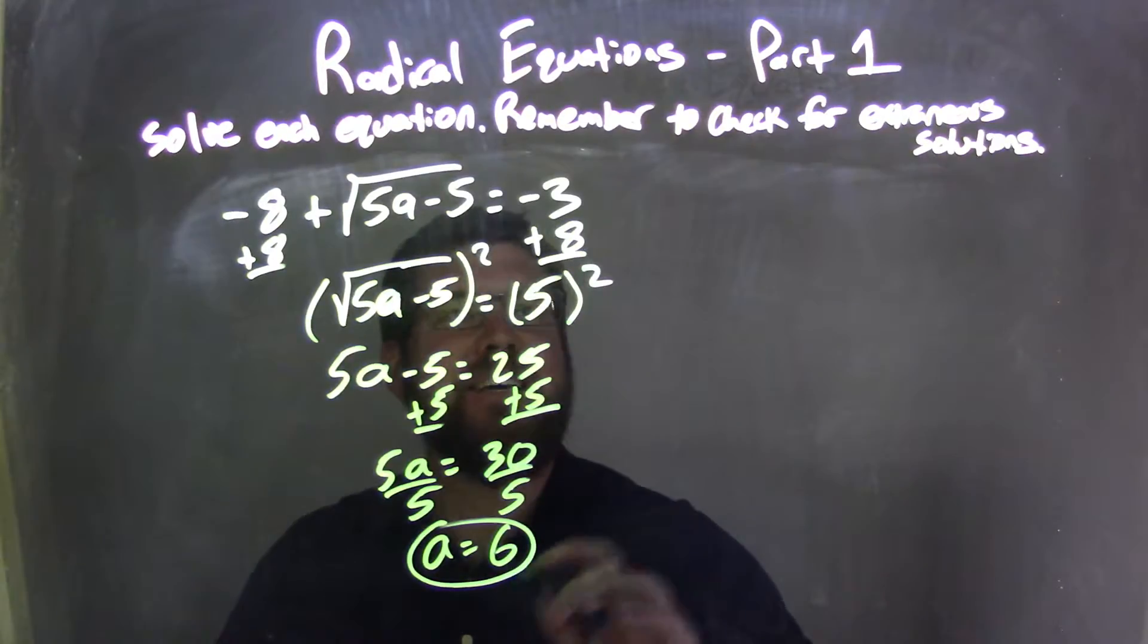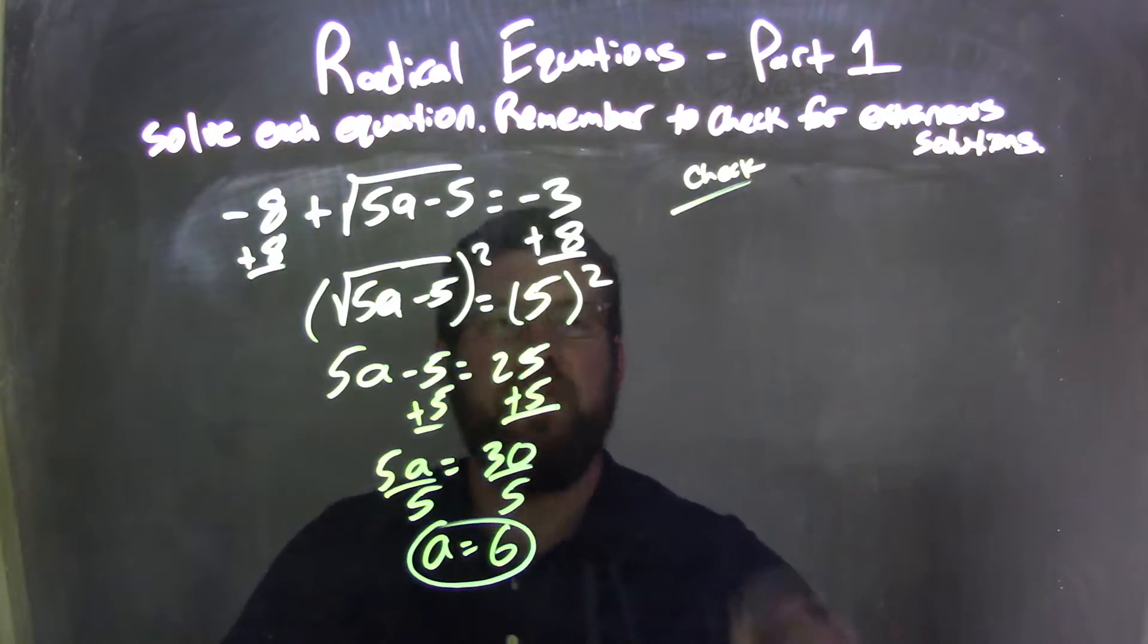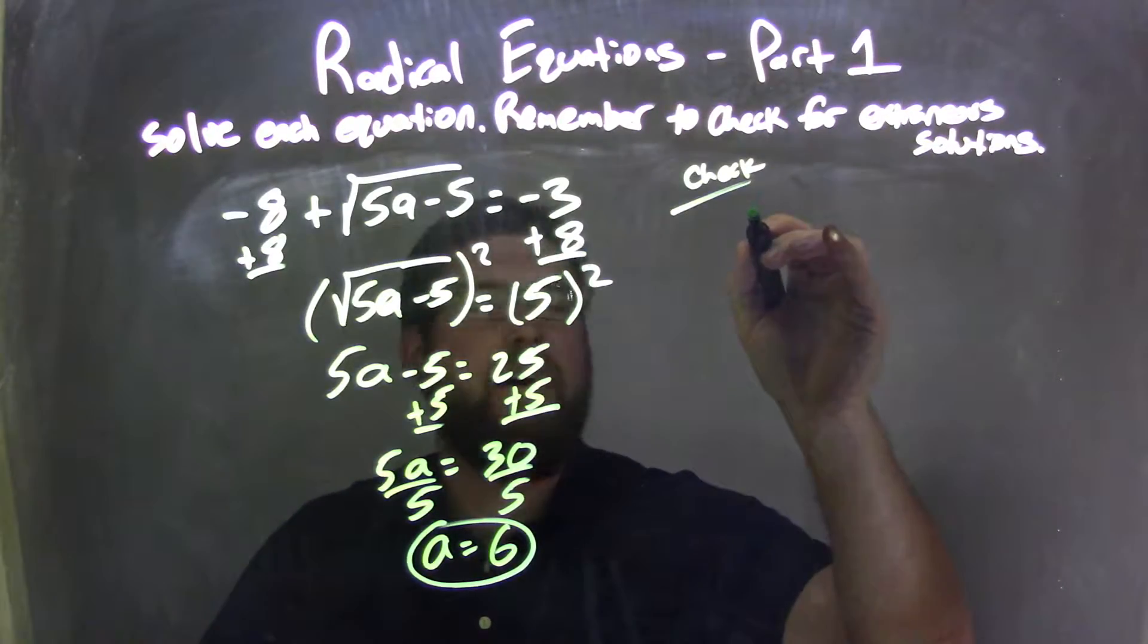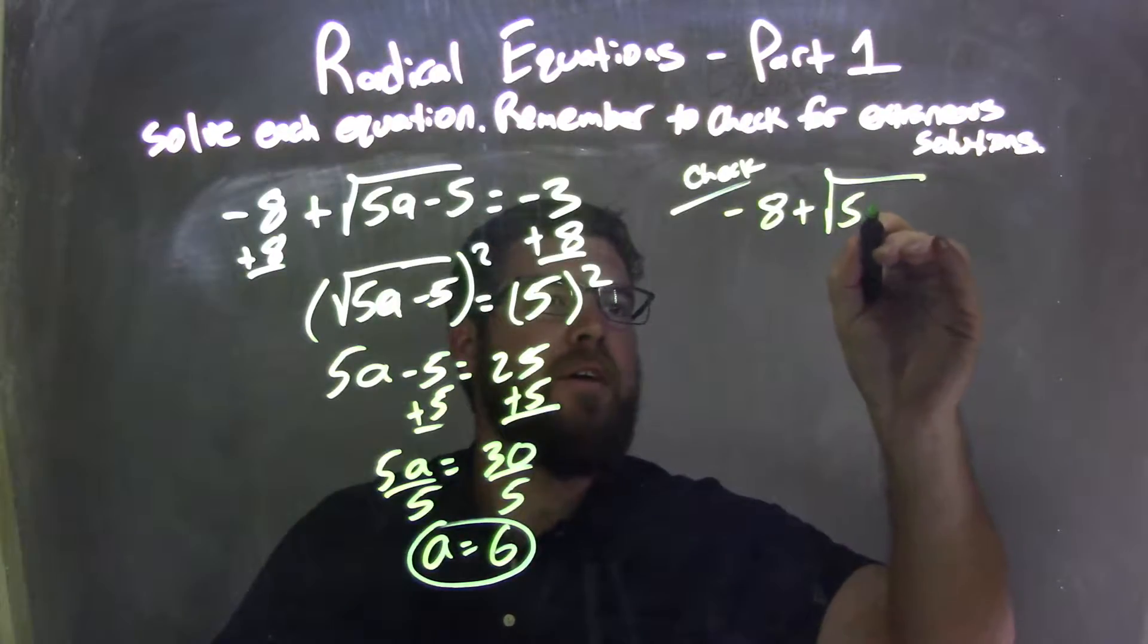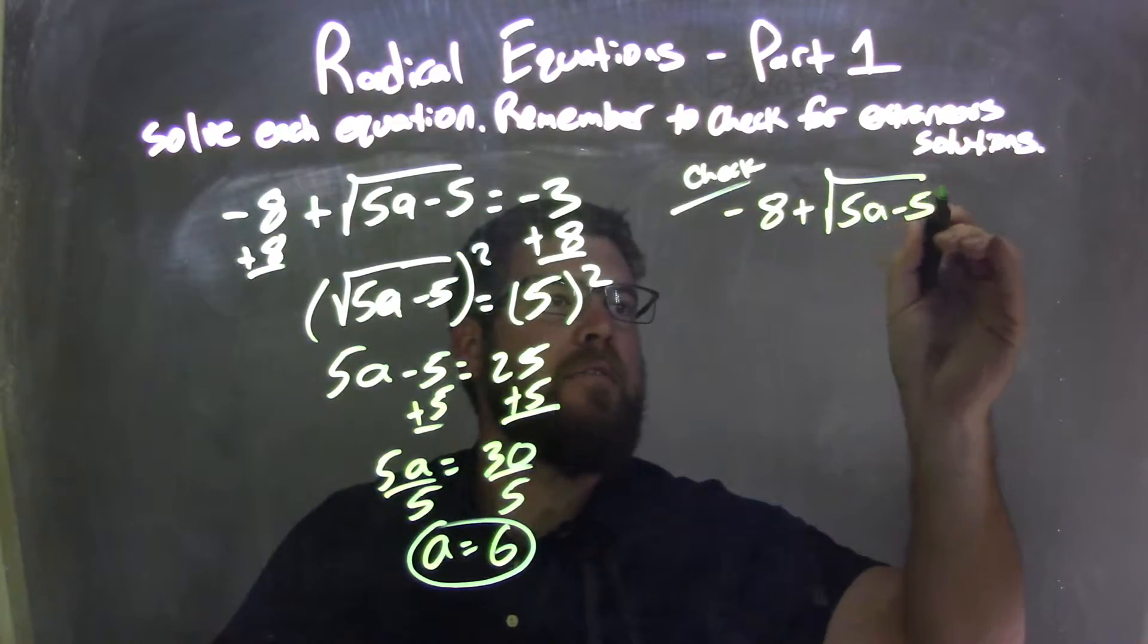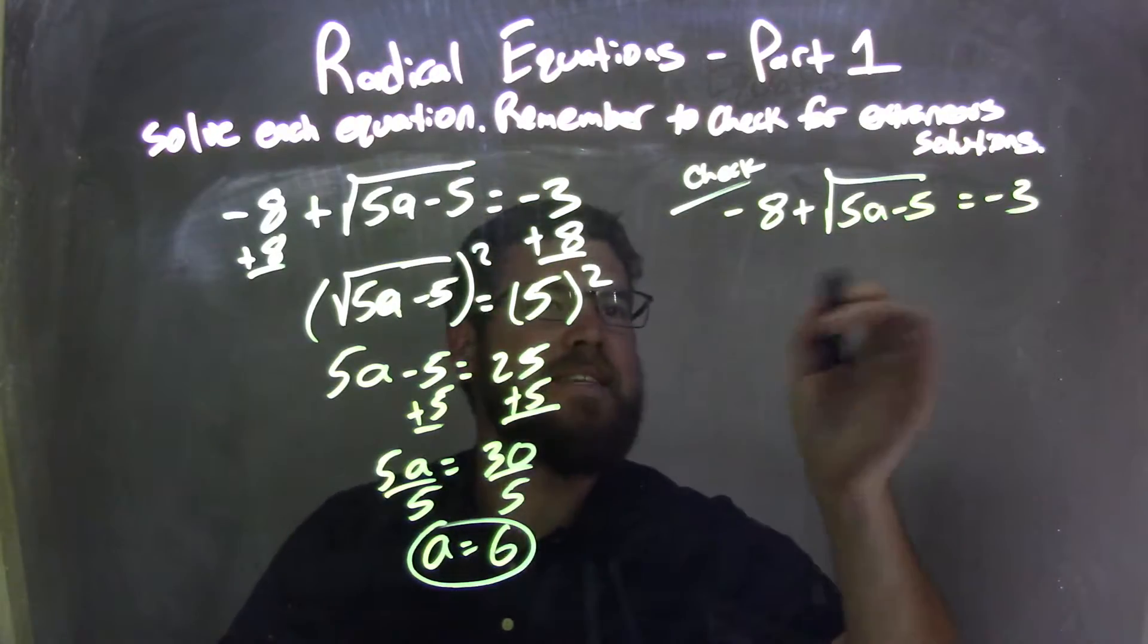Now I need to check to see if that's a true answer. I'm going to rewrite my equation: negative 8 plus the square root of 5a minus 5 equals negative 3. I'm going to plug 6 in now.